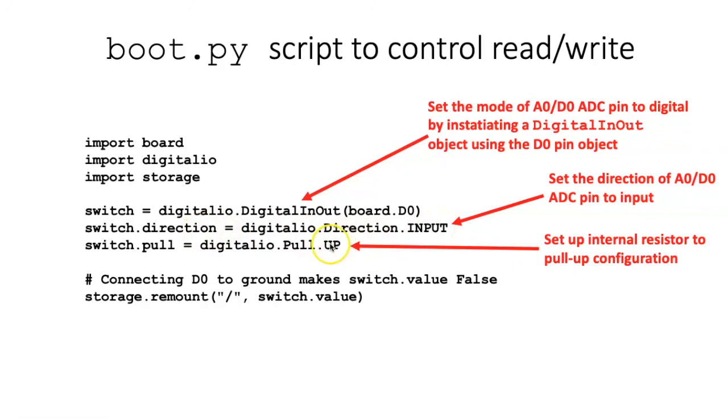And in this command, I tell the internal resistor to be in the pull-up mode, so that when the switch is open, it is at 3 volts.